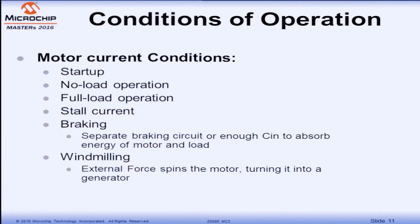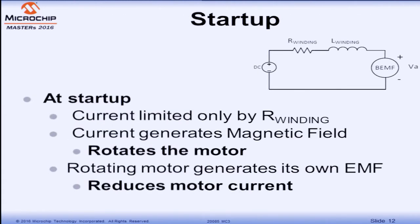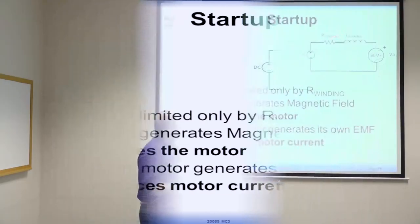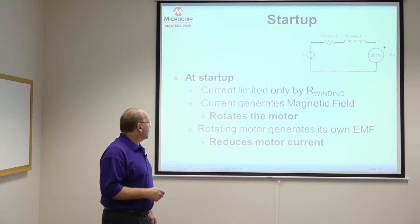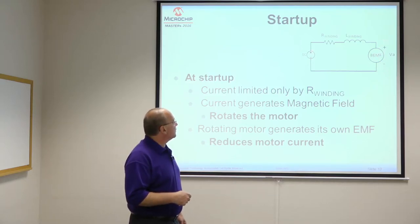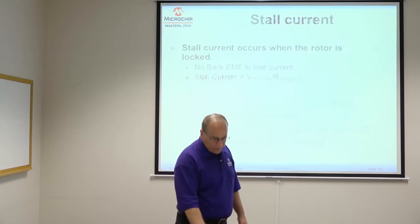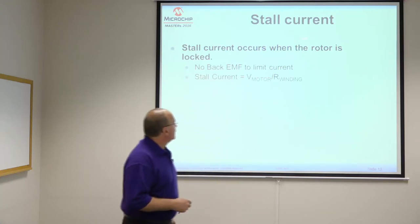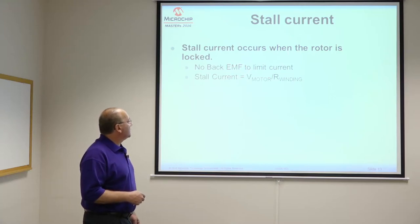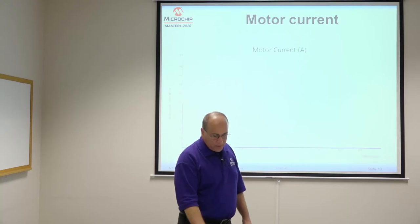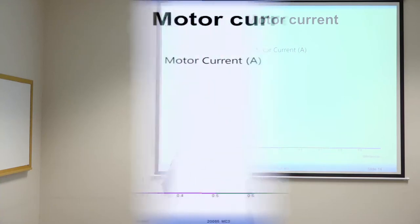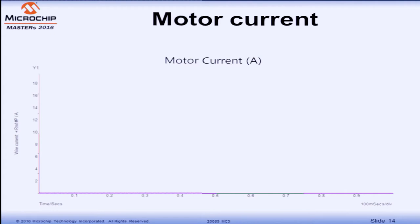At startup, from our motor model, the back EMF is zero when the motor's not spinning. Therefore, the only limitation to current is the winding resistance and the applied DC voltage to the motor terminals. Once the motor starts spinning, this back EMF opposes the voltage, the voltage across the winding resistance is less, and that reduces motor current. Stall current is when the motor stops but voltage is still applied — current equals the voltage across the motor terminals divided by the winding resistance. When you design your drive circuitry, it has to handle all conditions: not just normal operating or no-load, but stall and startup currents as well.